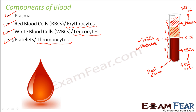Out of these four components, the red blood cells contribute the red color of blood — that is why they are called red blood cells. They are red because of the presence of a red-colored pigment called hemoglobin, which helps in the transport of oxygen due to its very high affinity for oxygen.